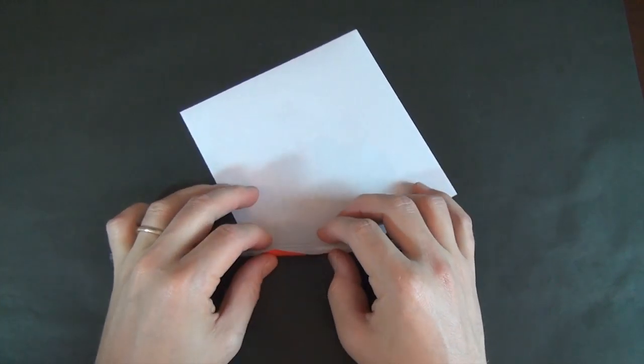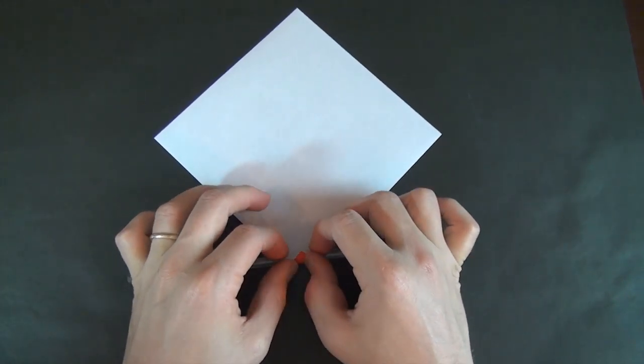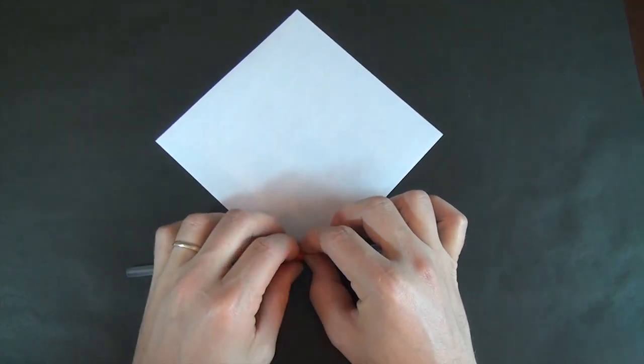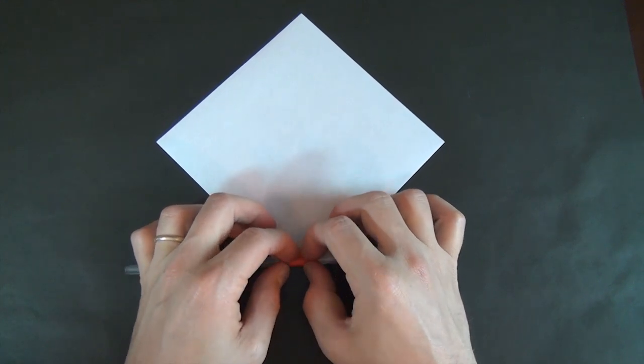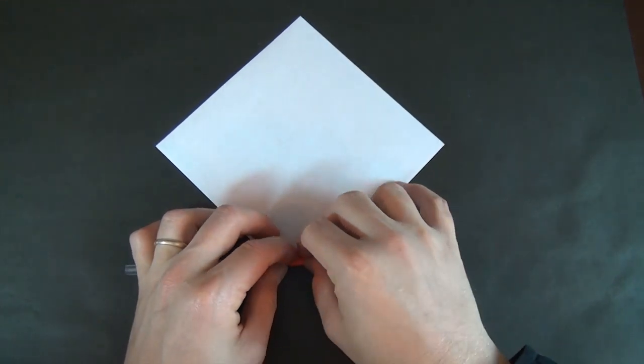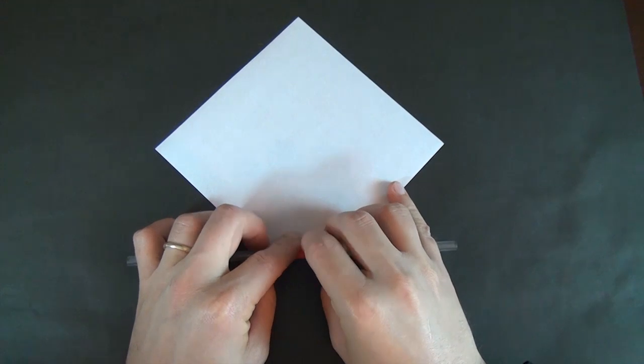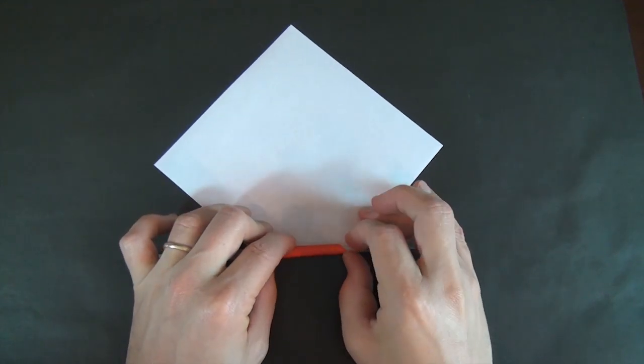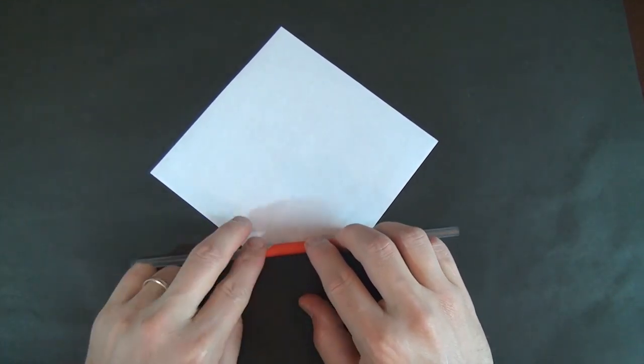So what you do is wrap the corner around the straw and just roll it up. Try to get it tightly rolled, and here we go.